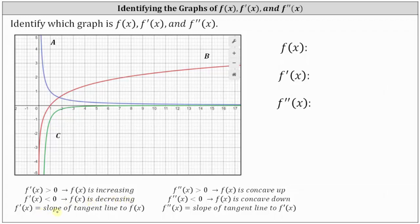f prime of x is equal to the slope of the tangent line to f of x. If f double prime of x is greater than zero, f of x is concave up. If f double prime of x is less than zero, f of x is concave down. And f double prime of x equals the slope of the tangent line to f prime of x.